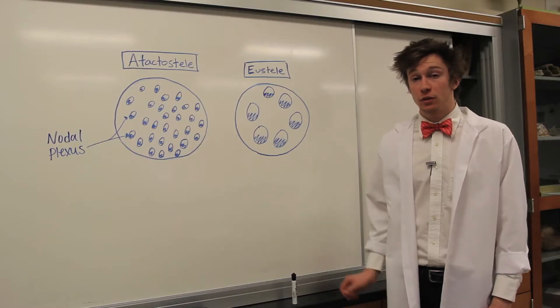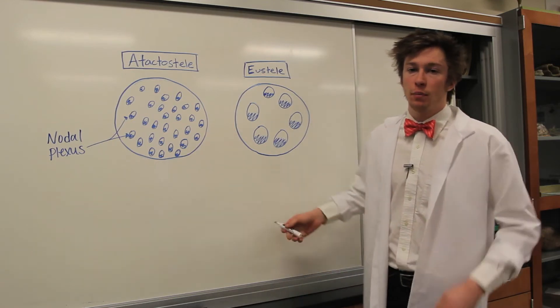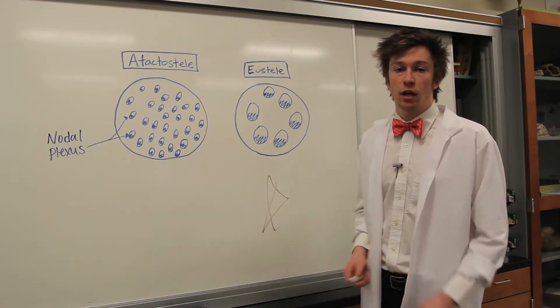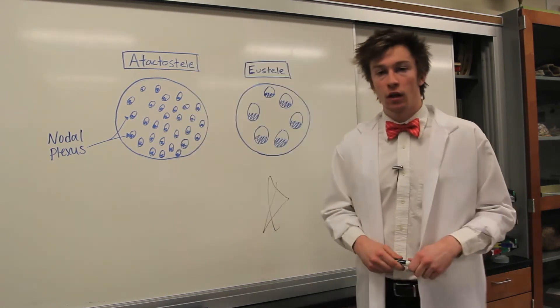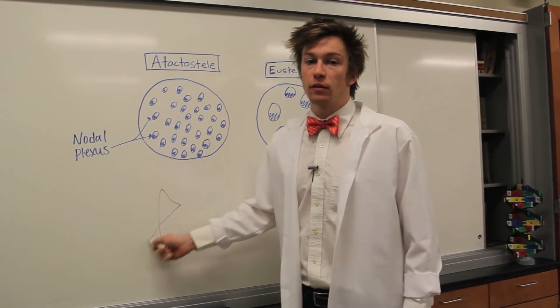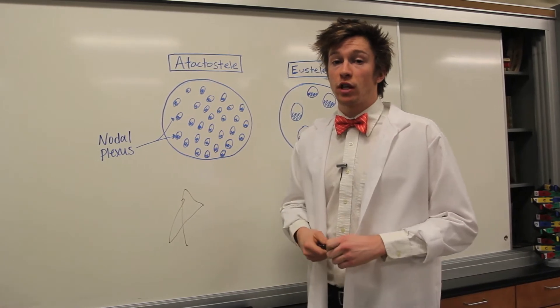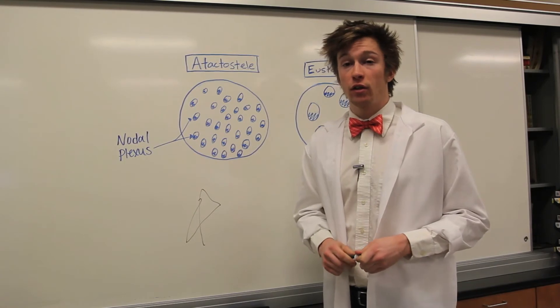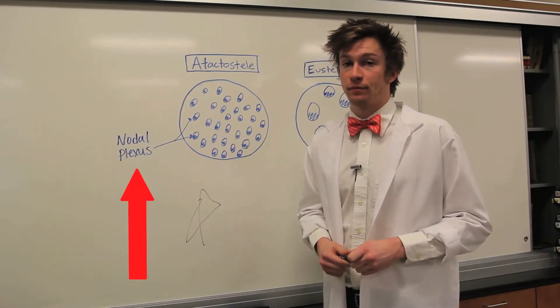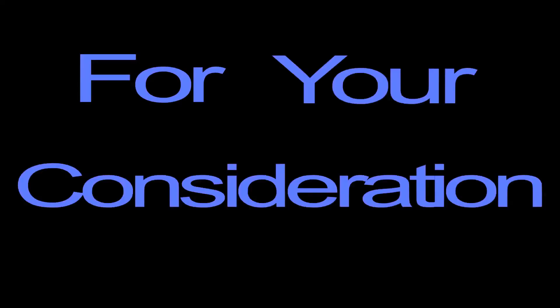There are more types of vascular cells. For example, the eusteele, which has this type of arrangement. Look at the little dinosaur eggs in there. And the atactosteel, which have many bundles used for transporting nutrients. Even smaller dinosaur eggs. Those are called nodal plexus. For your consideration.